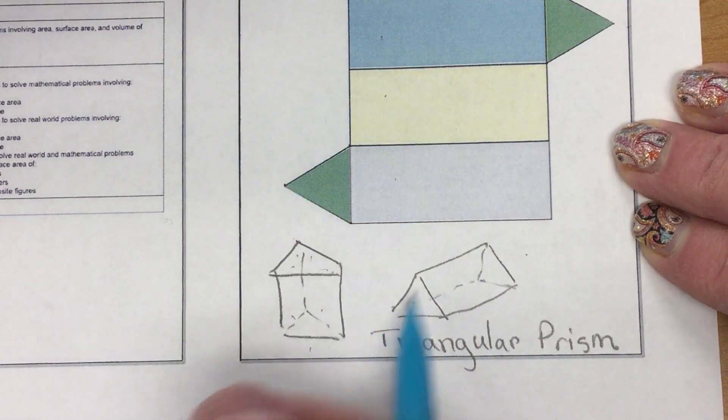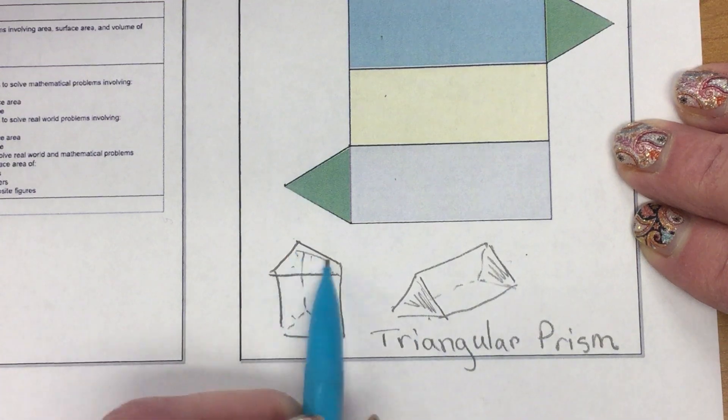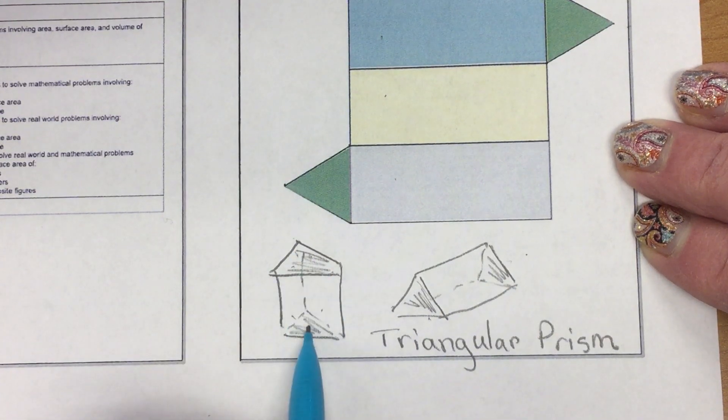A prism has two parallel bases, in this case, triangles. Bases do not have to be top and bottom.